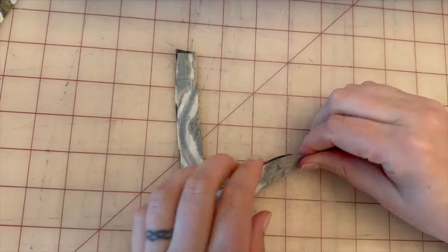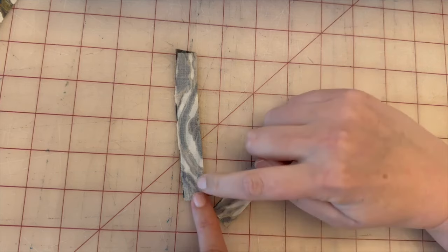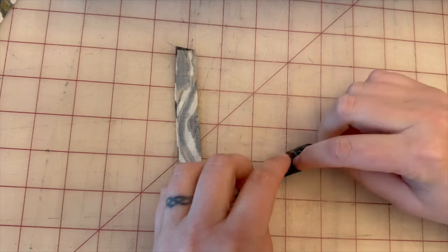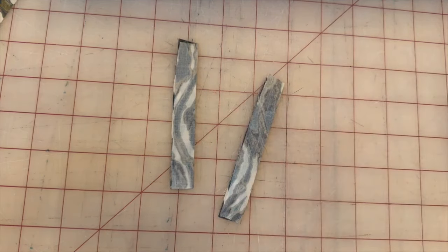Next, we're going to take pattern piece four, fold it in half, and then stitch quarter inch on each raw edge. Then we'll turn them inside out like we did the spaghetti straps. These are going to be our loops, which will attach to pattern piece number two.